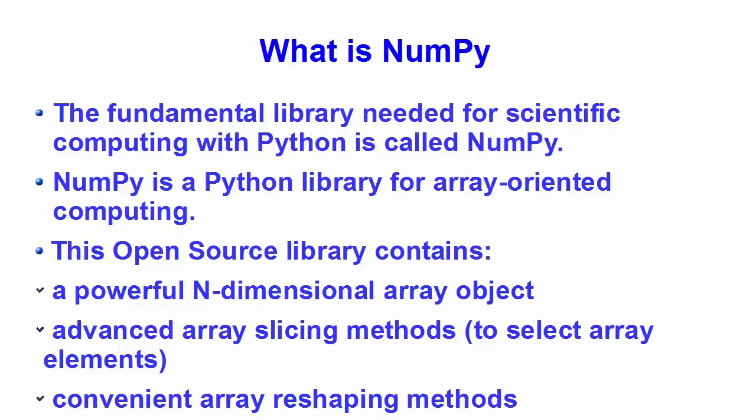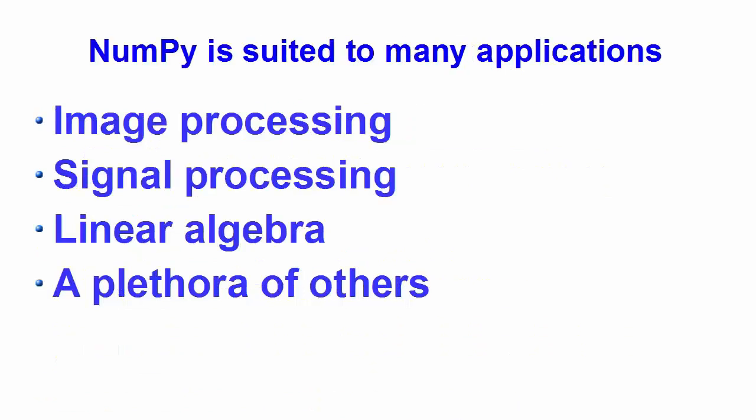There are several important differences between NumPy arrays and Python standard sequences like lists or tuples, which we are going to see in the next video. NumPy arrays have a fixed size — modifying the size means creating a new array. Additionally, NumPy arrays must be of the same data type, but this can include Python objects also. NumPy can be used for many applications including image processing, signal processing, linear algebra, and multiple other functionalities.